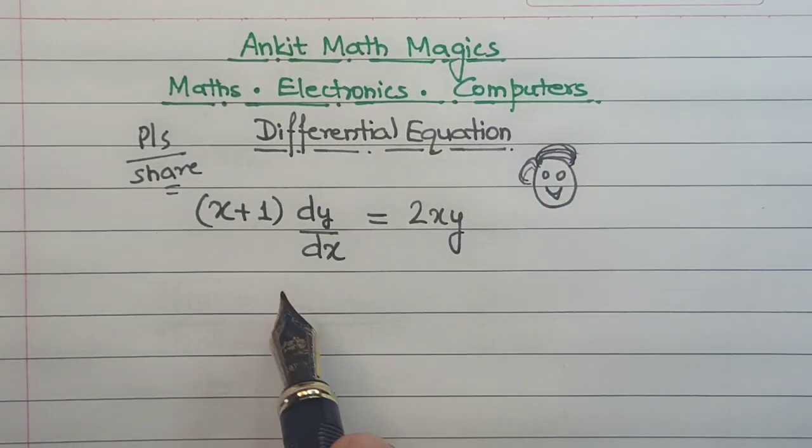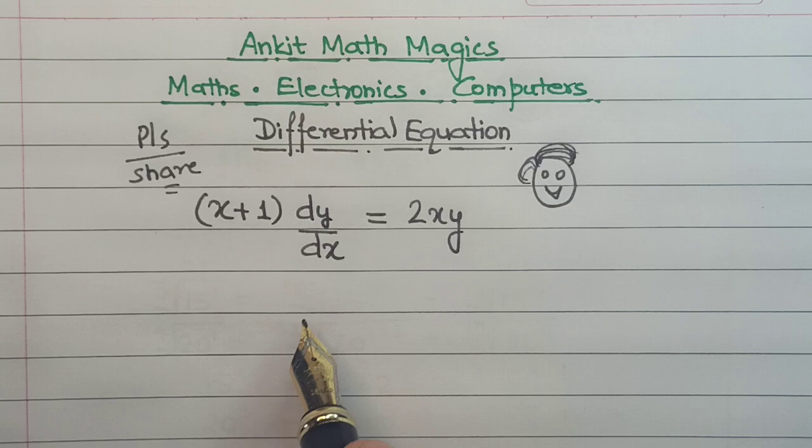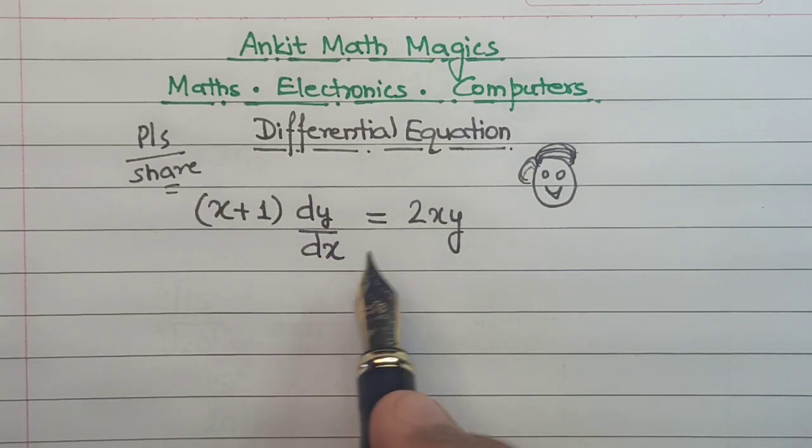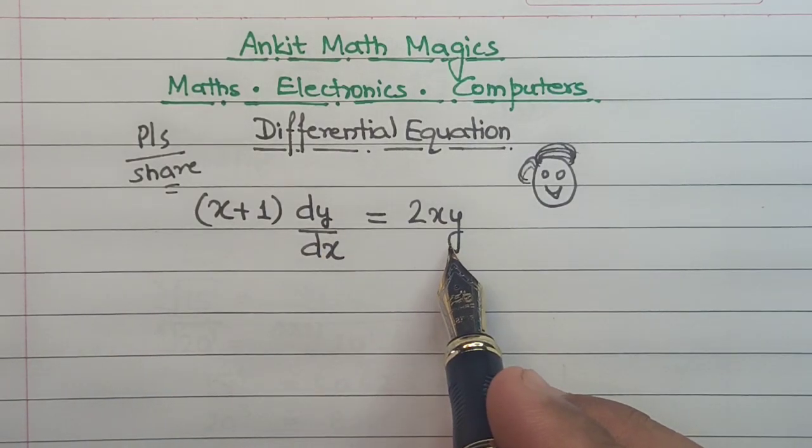All right, so here we have a situation where we have this expression: (x+1) dy/dx = 2xy.